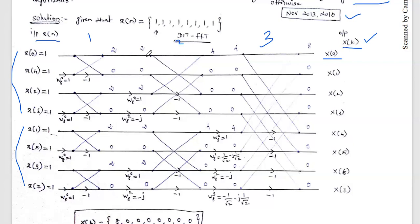The first stage output is now given as input to the second stage. In the first two lines there is no twiddle factor, so 2 appears directly. Here, 2 is multiplied by W8^0 which equals 1, giving 2. Then 0 is multiplied by twiddle factor W8^2 which equals minus j, but 0 multiplied by anything is 0. Similarly, the remaining values of 2 and 0 appear at the second stage inputs.